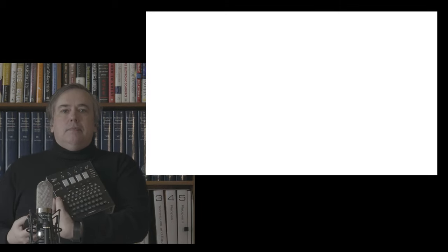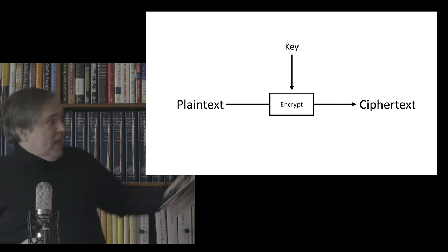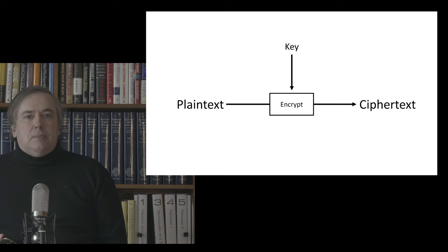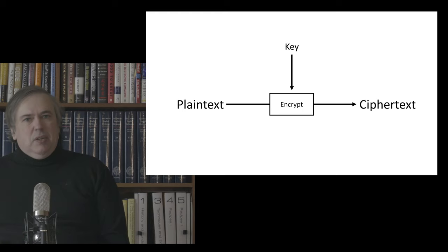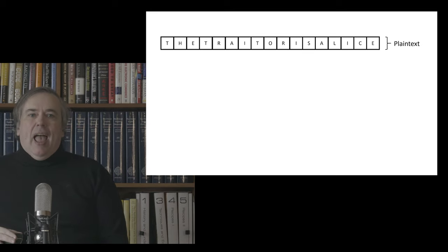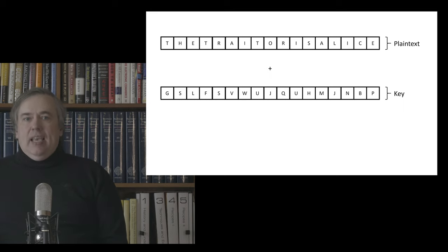Why is this unbreakable? Let's see what happens when we try to break it by brute force, using letters and clock arithmetic. Our plaintext is 'the traitor is Alice' — note there's no space bar on the Enigma machine, so spaces are disregarded and the letters are smashed together. We encrypt that with a random key to get the ciphertext.